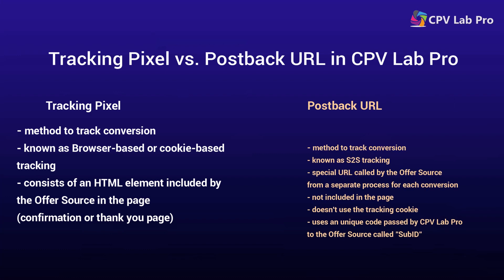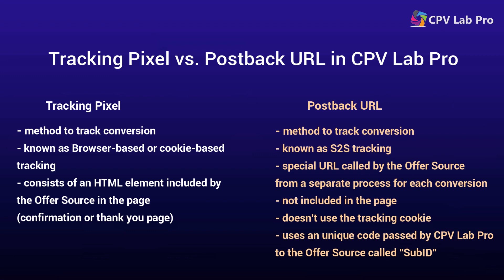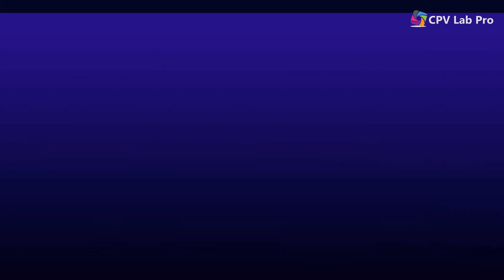The postback URL, also known as server-to-server tracking, is a special URL that the offer source calls from a separate process for each converting visitor. Unlike the tracking pixel, the postback URL is not included in the page visitors see, it doesn't use the tracking cookie, and it is executed in a separate process by the offer source. The postback URL uses a unique code passed from CPV Lab Pro to the offer source for each visitor, called SubID. The SubID will be passed back to CPV Lab Pro in the postback URL for each conversion in order to identify the converting visitor.